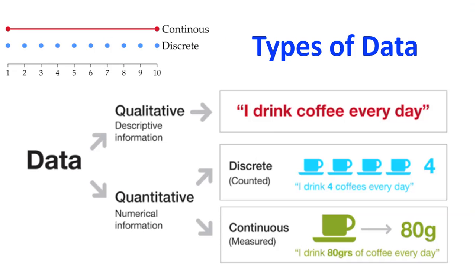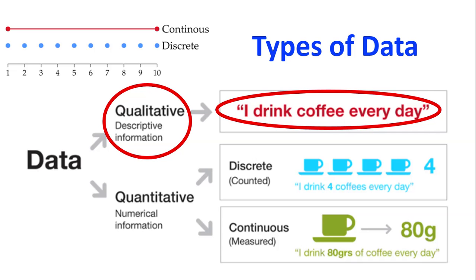So then we get to our different types of data. The first type of data is what we call qualitative. And that is any words. It could be talking about a sentence. It could be talking about a group. Gender, eye color, ethnicity. Those are all groups. So anything that's word based is qualitative. It's descriptive information.